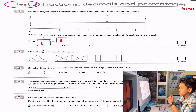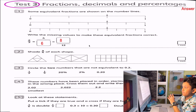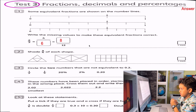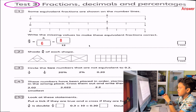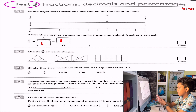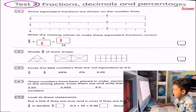Let's move on to the second question: shade 3 quarters of each shape — not 3 quarters of one of the shapes, all shapes. The first shape, shape A, is easy because there's already 4 parts and you must shade in 3. So let's shade them in.